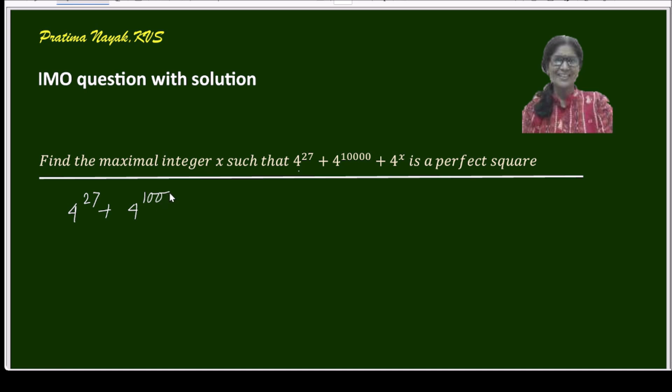So 4^27 + 4^10000 + 4^x can be written as 2^54 + 2^20000 + 2^2x.